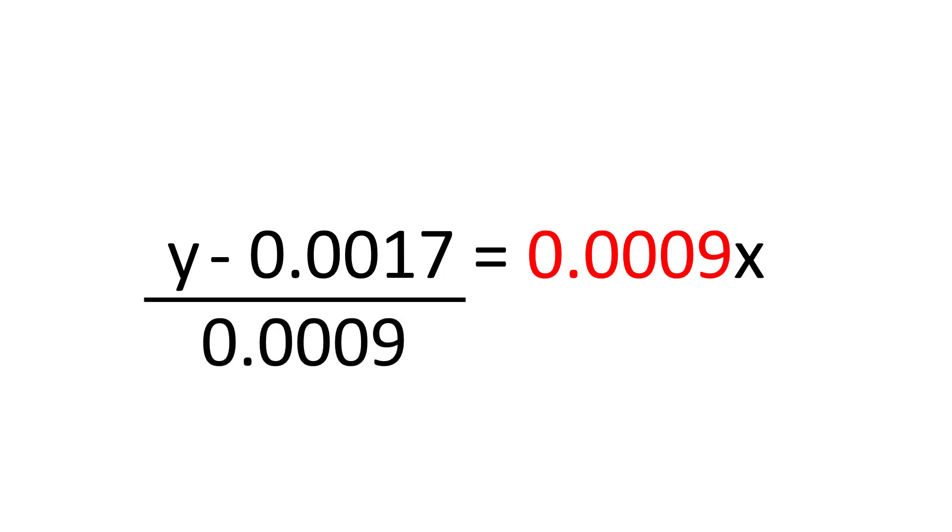Doing so on the left side of the equation means I now have y subtract 0.0017 divided by 0.0009. And then on the right side of the equation the slope value will no longer be there since 0.0009 divided by itself is simply 1.